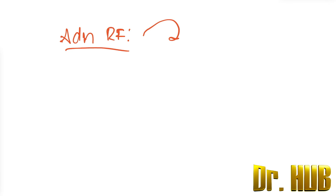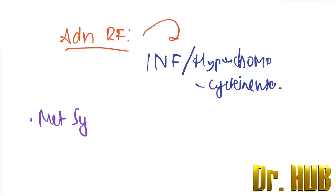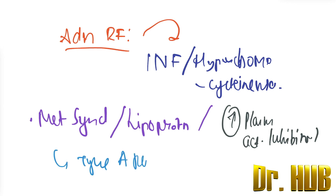Now for the additional risk factors: these include inflammation, hyperhomocysteinemia, metabolic syndrome, elevated lipoprotein levels, elevation of plasminogen activator inhibitor-1, and lastly Type A personality.